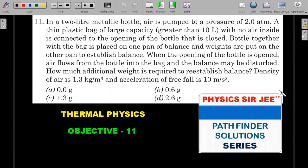In a 2 liter metallic bottle, air is pumped to a pressure of 2 atmospheres. A thin plastic bag of large capacity, greater than 10 liters, with no air inside is connected to the opening of the bottle that is closed.